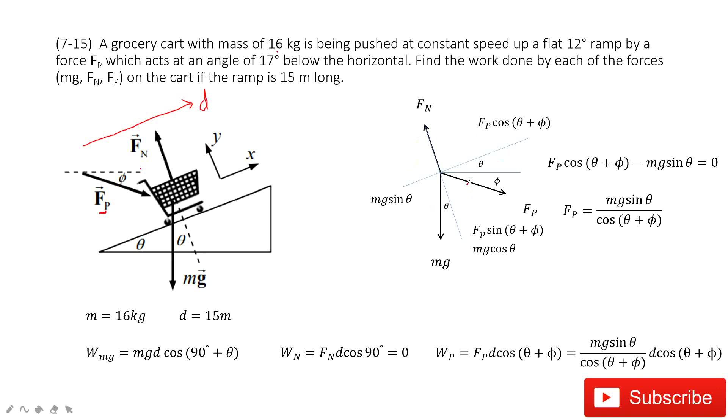So we do force analysis. You can see for this force, we have gravity, the force by the person, and the normal force. We need to project the gravity at x-component and y-component: Mg sine θ and Mg cosine θ. Now how can we project Fp along x-component and y-component?